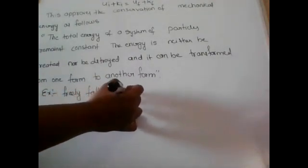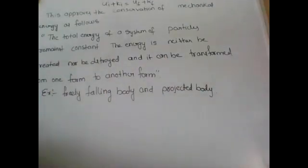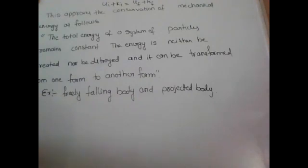For example, a freely falling body and a projected body. So this is about conservation of energy: U_i plus K_i equal to U_f plus K_f. From this we get the conservation of mechanical energy — the total energy of a system of particles remains constant, the energy is neither created nor destroyed, and it can be transformed from one form to another form.